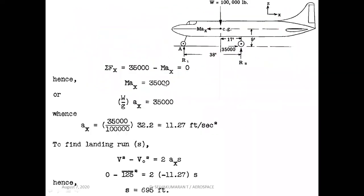To find the ground reactions R1 and R2 and the landing run distance with constant braking force, we resolve horizontally. The braking force equals the inertia force: MA_x equals 35,000. M is W/G into A_x, so A_x equals 35,000 divided by W. W is 100,000 pounds, G is 32.2 feet per second squared. So the deceleration A_x is 11.27 feet per second squared.